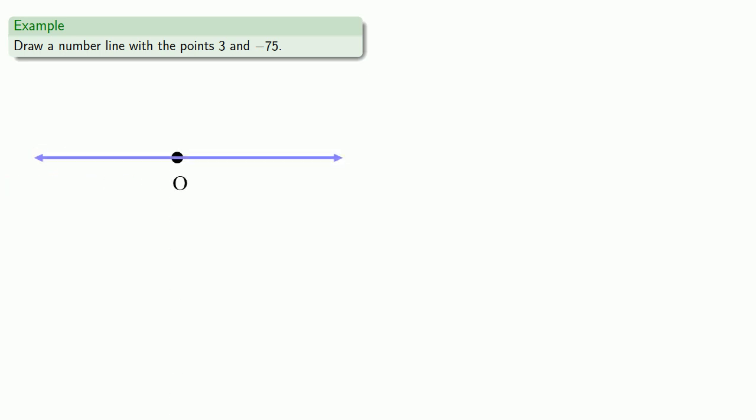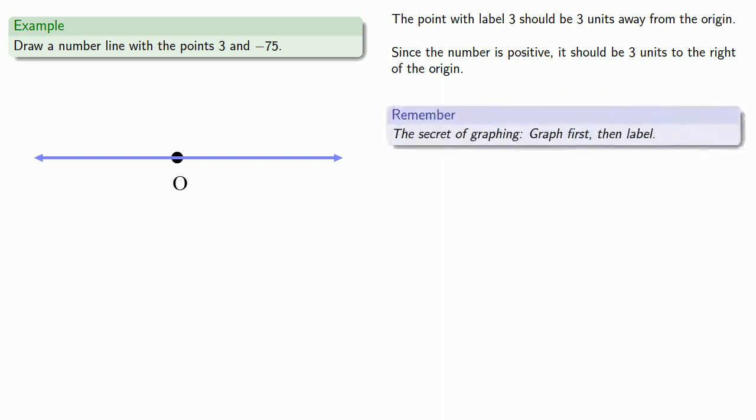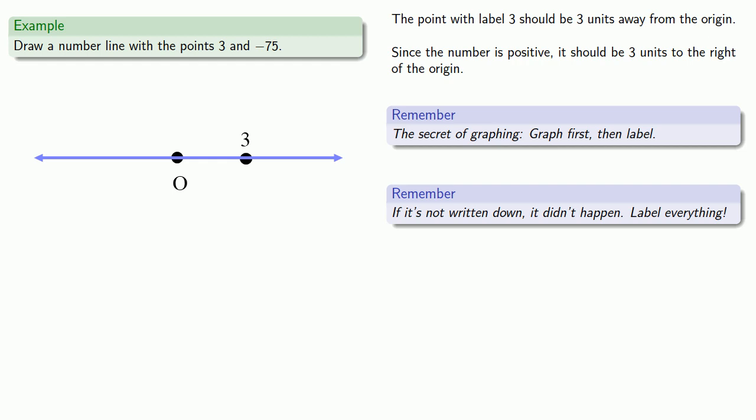So the point with label 3 should be 3 units away from the origin. And since the number is positive, it should be 3 units to the right of the origin. And the secret to graphing is graph first, then label. In this case, we know we're someplace off to the right of the origin, so let's graph the point first. And remember, if it's not written down, it didn't happen. So we'll label this point 3. And here's the secret to graphing. Because I've written down the 3 here, that tells me that this distance is 3 from the origin.